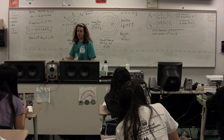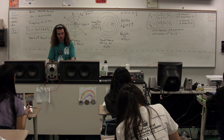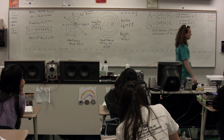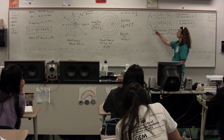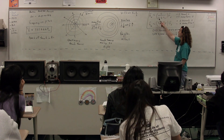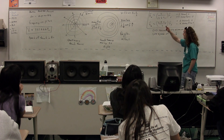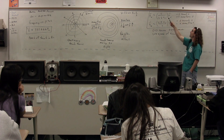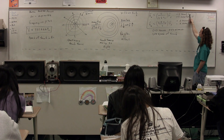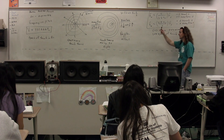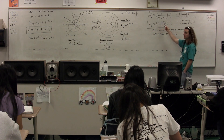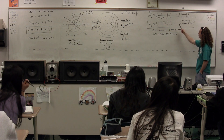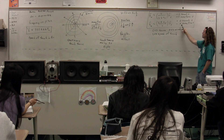O stands for observer, S stands for source, and V without a subscript is the speed of sound. The observed frequency is equal to the speed of sound divided by the quantity of the speed of sound minus or plus the speed of the source, that whole quantity multiplied by the frequency of the source. Whether it's minus or plus depends on whether the source is moving toward or away from the observer. The second equation: the observed frequency equals the speed of sound plus or minus the speed of the observer, divided by the speed of sound, that quantity multiplied by the frequency of the source.